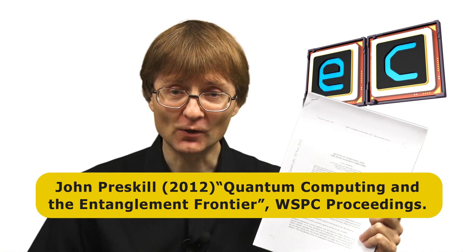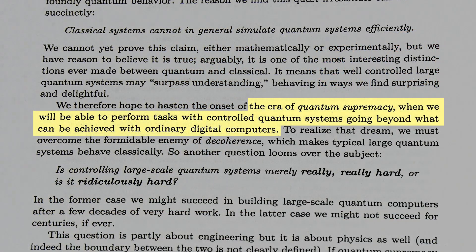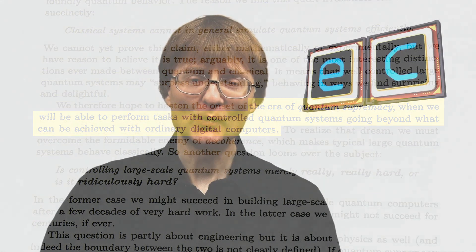Even if quantum computers can perform useful tasks, there's little point building them if they can't do those tasks better than a traditional computer — and this brings us to quantum supremacy, a term first coined in 2012 by John Preskill. Until very recently, it was thought that 49 or 50 qubits would be sufficient to achieve quantum supremacy. However, in October 2017, IBM demonstrated it was possible to simulate a 49-qubit quantum computer using traditional hardware, meaning the 49-qubit Intel and 50-qubit IBM machines are unlikely to be found quantum supreme.